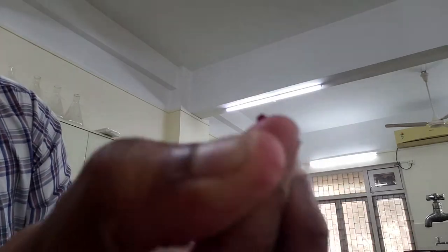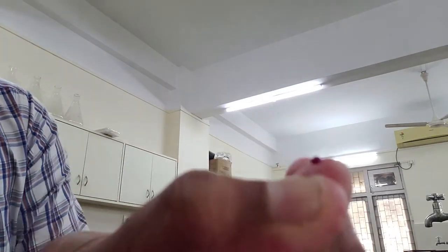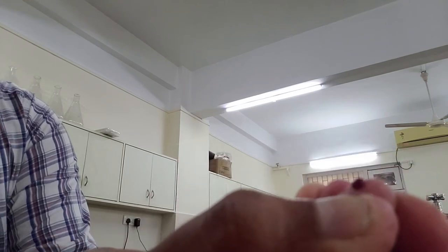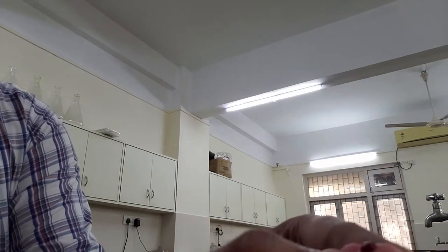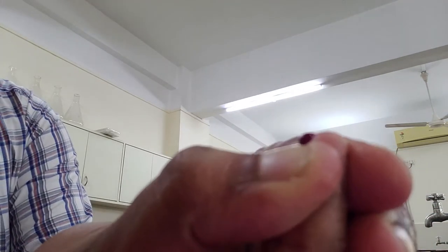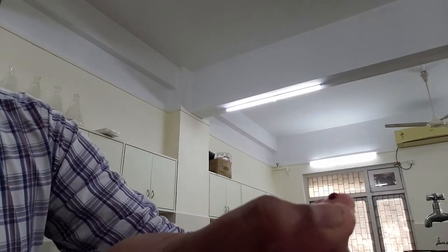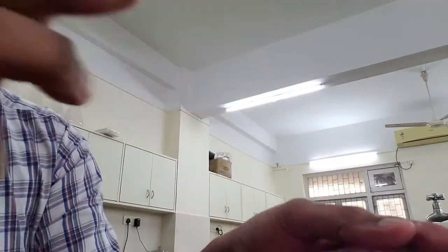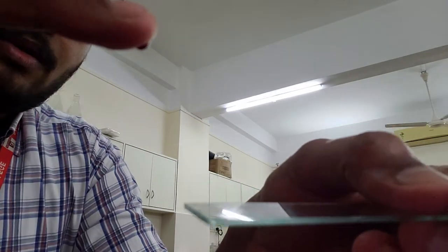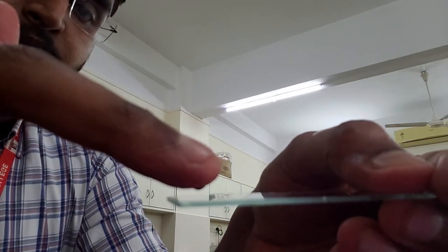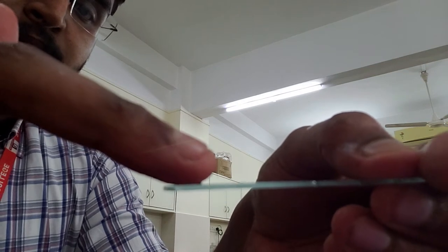You can see probably that there is blood oozing out from my finger right now. I'm just going to apply a little more pressure so that I get more blood, and I am going to put it onto the slide. This is the slide on which I will be placing a drop of blood.